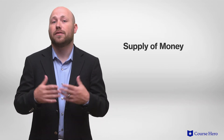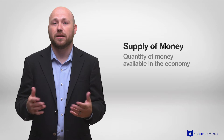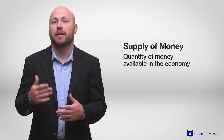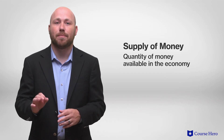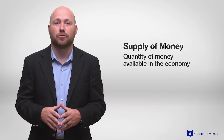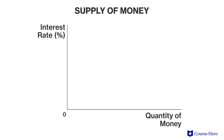Therefore, the supply of money — the quantity of money available in the economy — is set by the Fed independent of the interest rate. This makes the supply of money a vertical line at whatever quantity of money the Fed determines based on monetary policy and price levels.